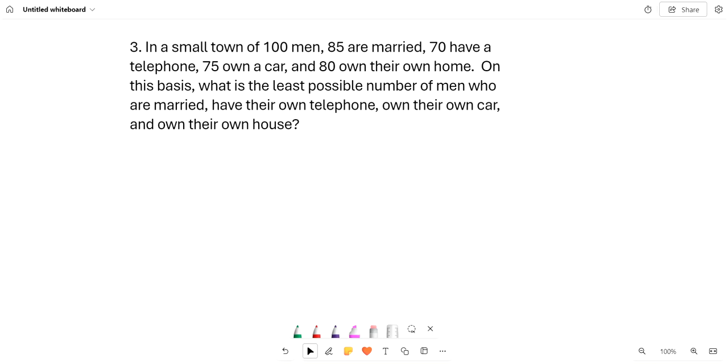So this is week 43, Tuesday, number three. In a small town of 100 men, 85 are married, 70 have a telephone, 75 own a car, and 80 own their own home. On this basis, what is the least possible number of men who are married, have their own telephone, own their own car, and have their own house?